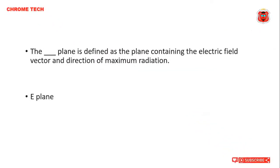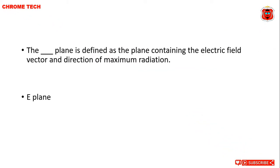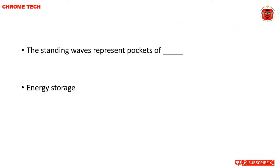The dash plane is defined as the plane containing the electric field vector and direction of maximum radiation. The correct answer is E-plane.